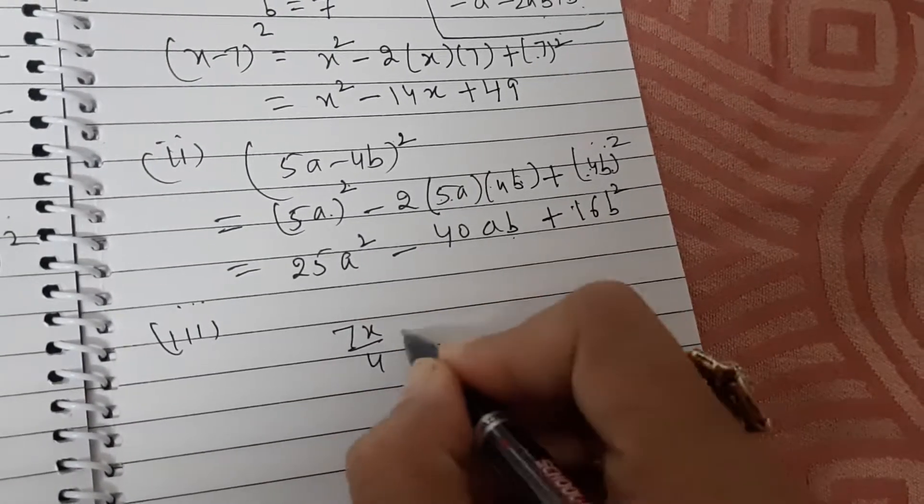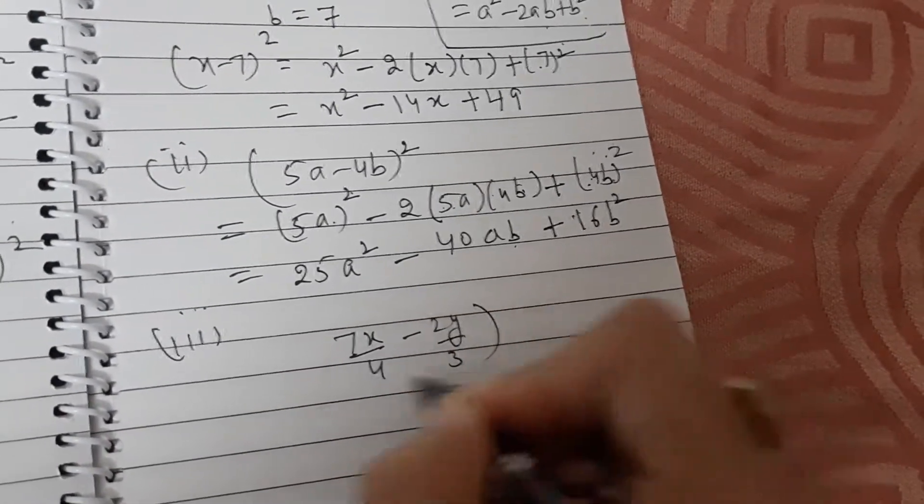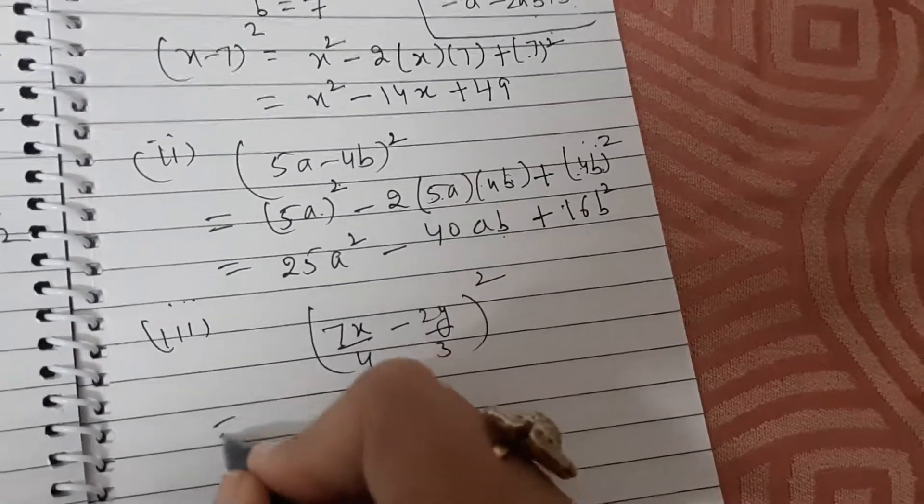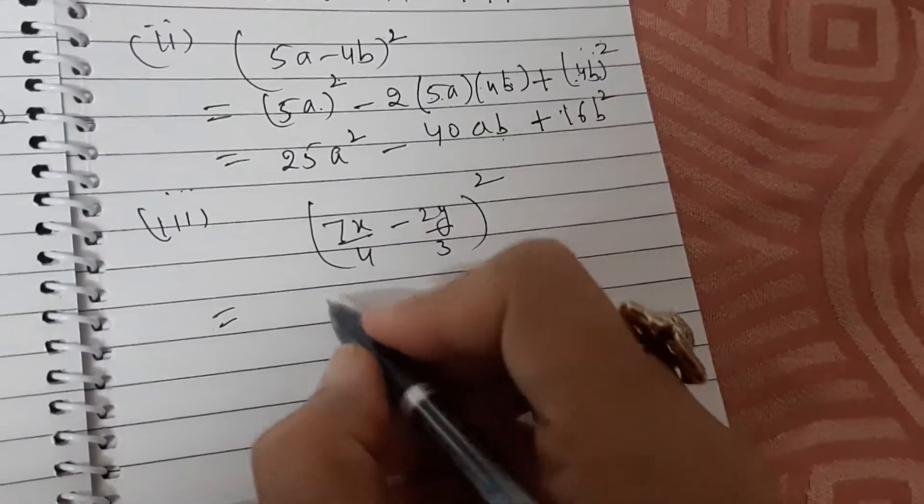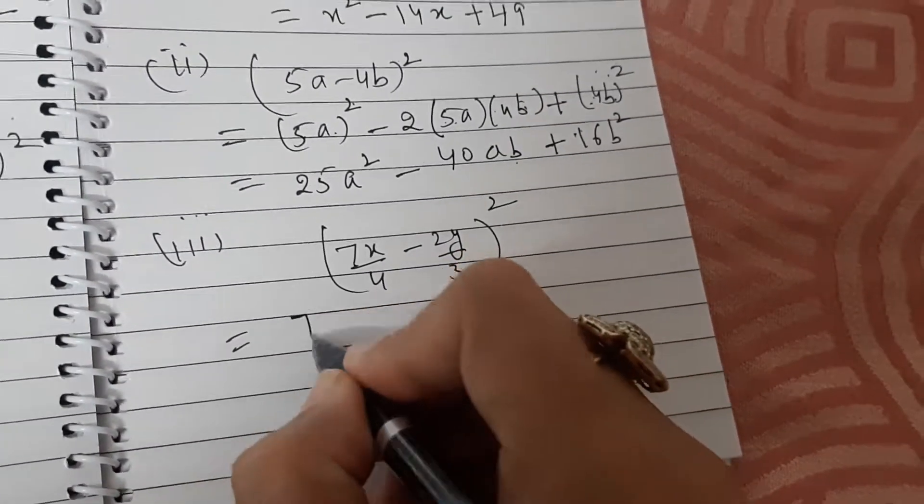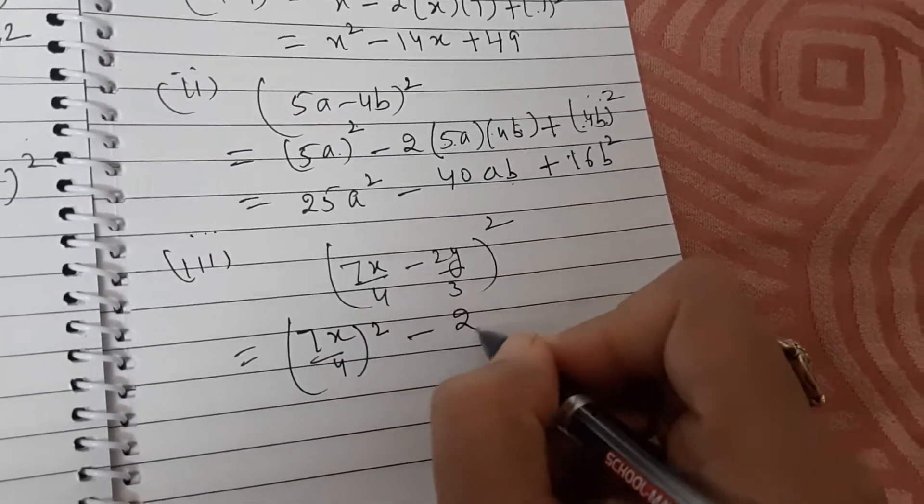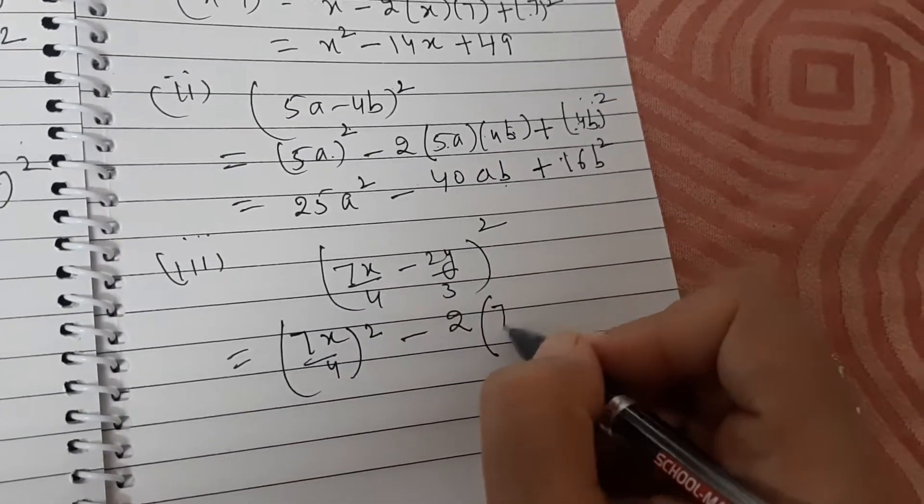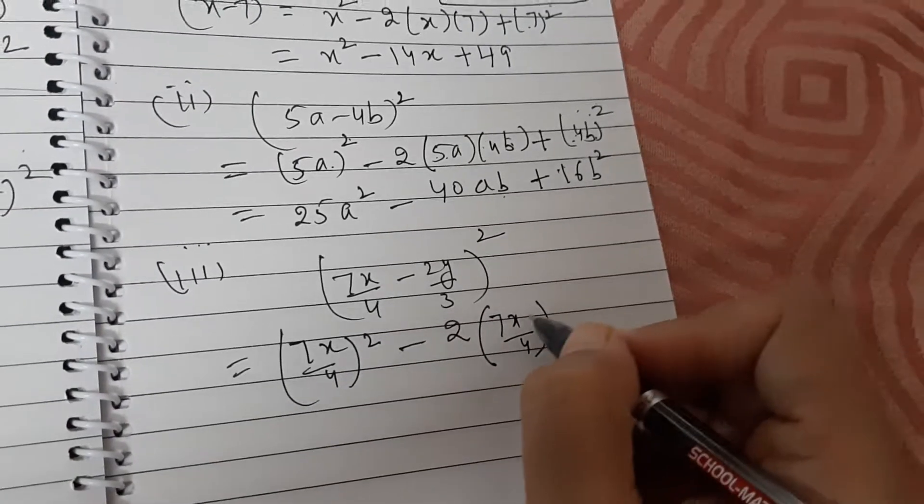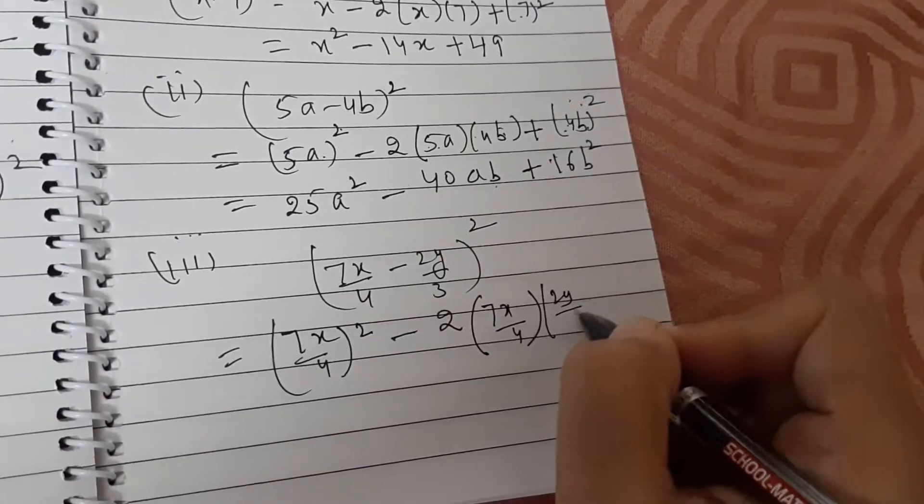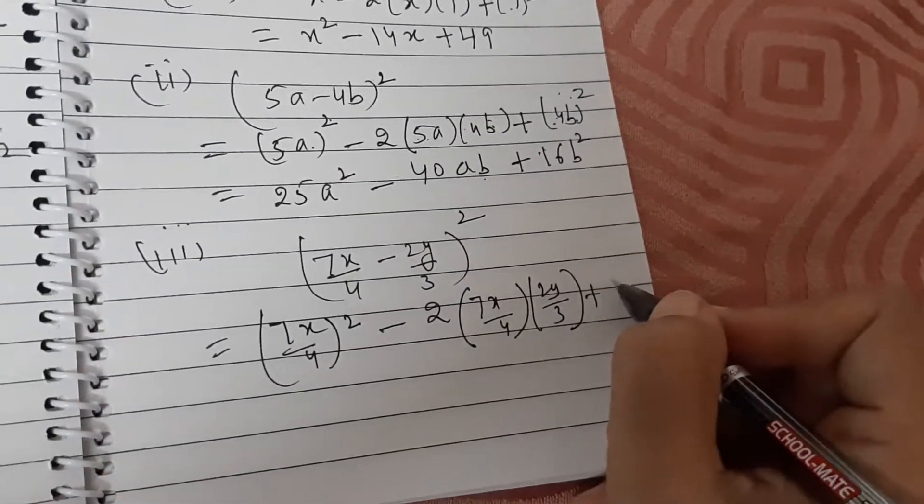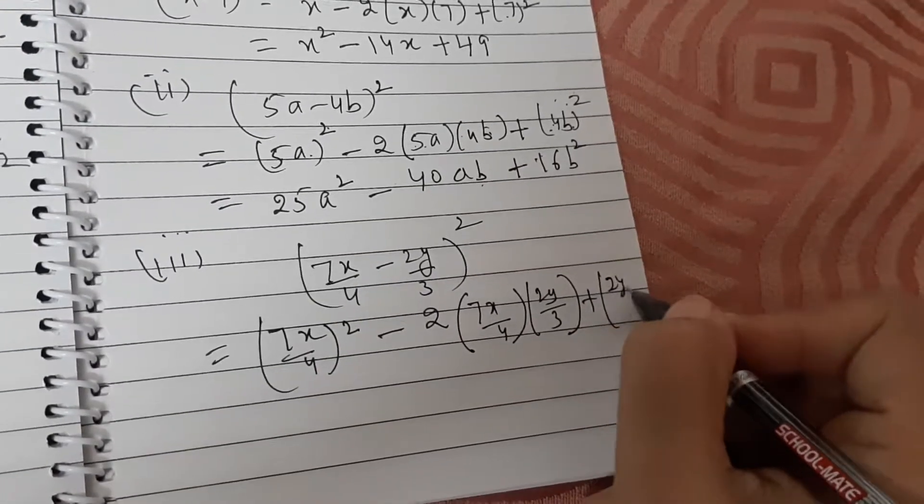7x upon 4 minus 2y upon 3 whole square. This will be equal to square of the first term minus 2 into product of two terms 7x by 4 into 2y by 3 plus square of the second term.